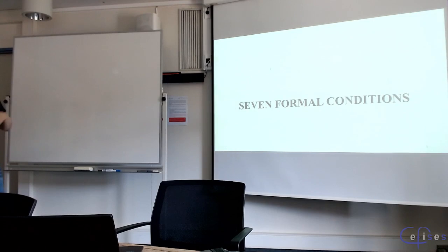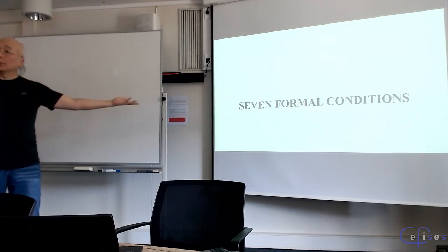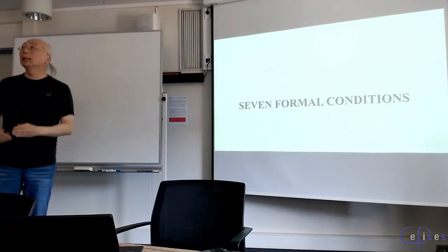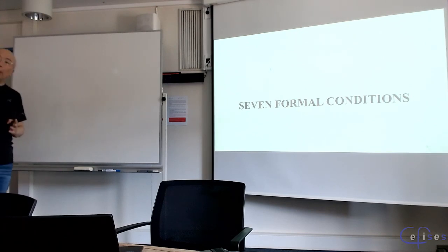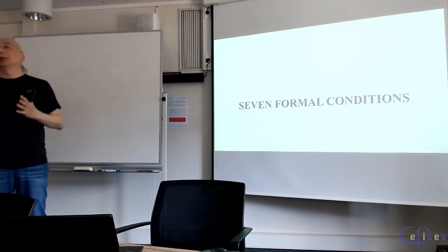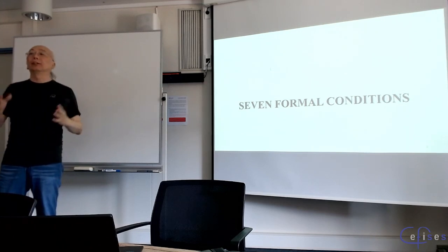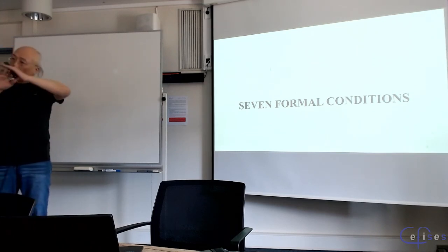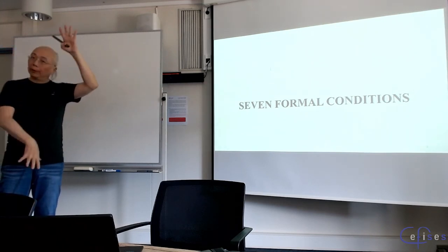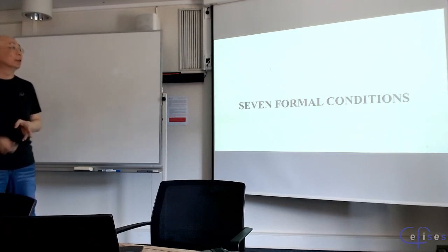The most important job is to establish those correctness conditions — that's what I meant by the seven formal conditions. For each backtracking, it consists of two parts: one part is backtracking to a historical fact, and another consists of backtracking to a historical counterfact. They have different formal structures.